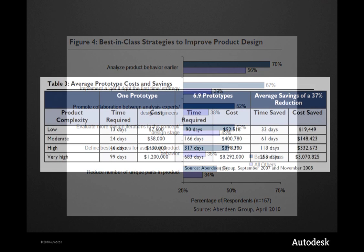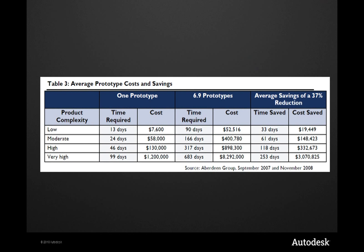Building and testing too many physical prototypes can adversely impact time to market and cost. A recent Aberdeen report found that the industry average is 6.9 prototypes per design. So think about this: how many prototypes do you build? When in the design process are the prototypes constructed and tested? And how much can you change the design based on the results of those prototypes?